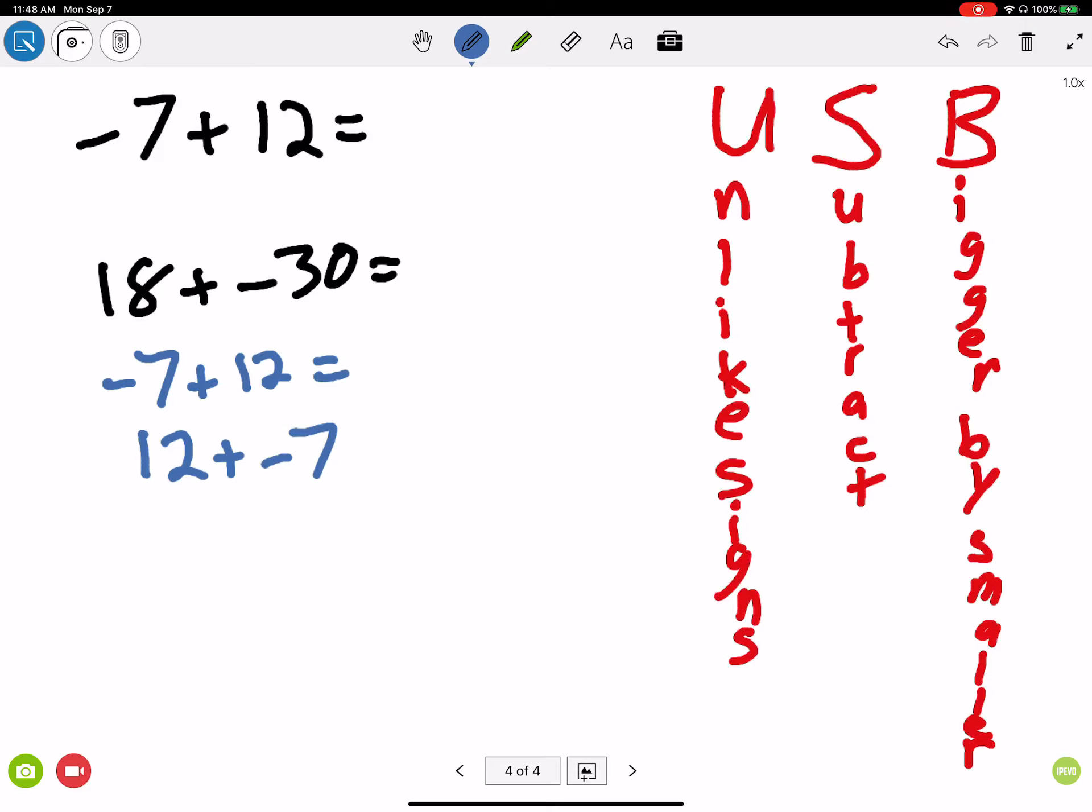If I have unlike signs, which I do because 12 is positive and the 7 is negative, now all I have to do is subtract the bigger number, which is 12, by the smaller number, which is 7, and then I'm going to keep the sign of the bigger number. Which one's bigger, 12 or 7? 12. And since it's positive, my answer is going to be positive.